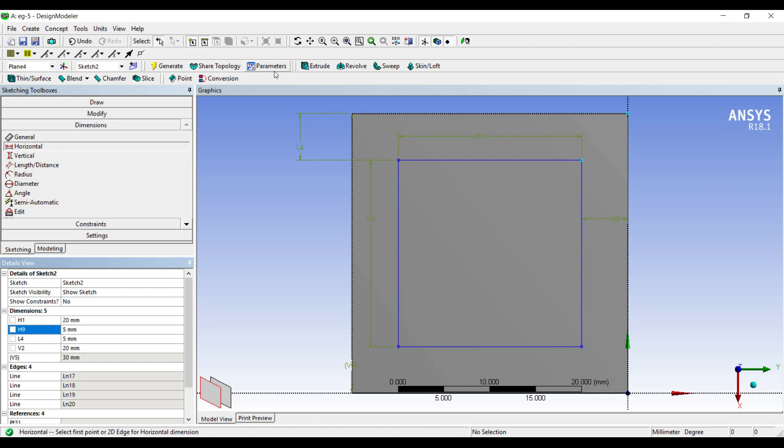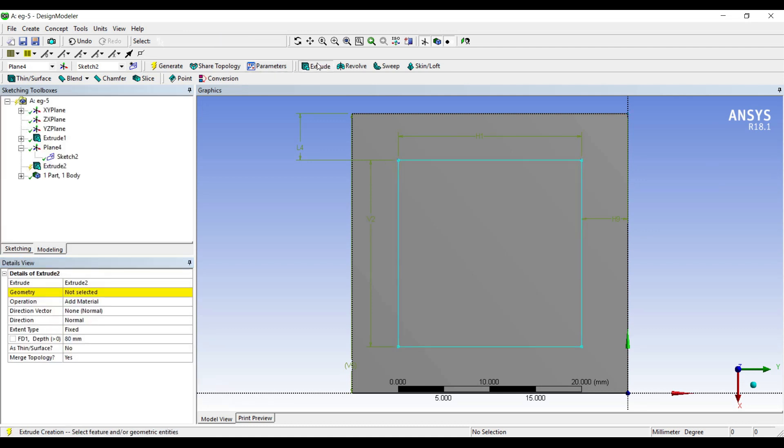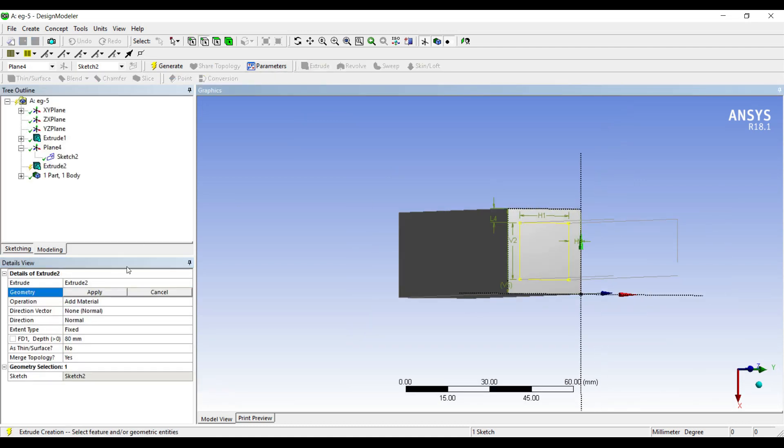Now I will extrude, apply. The length is 90 mm. From add material, I change it to add frozen, generate.